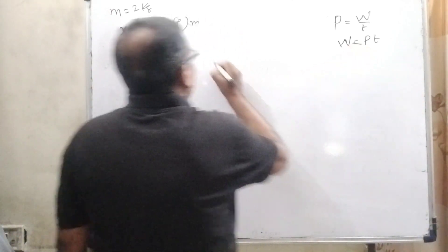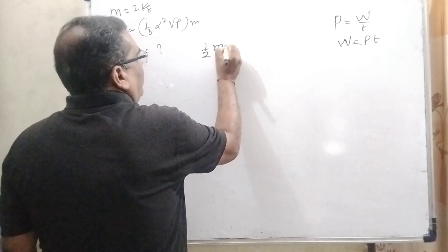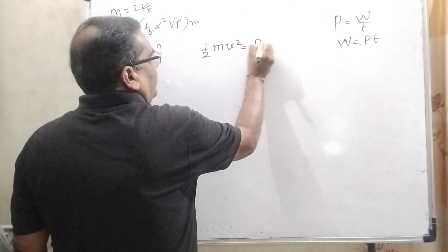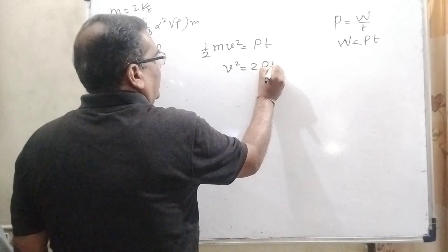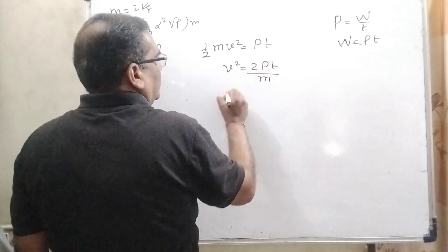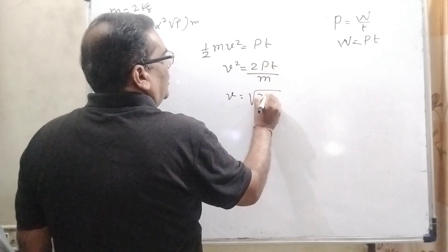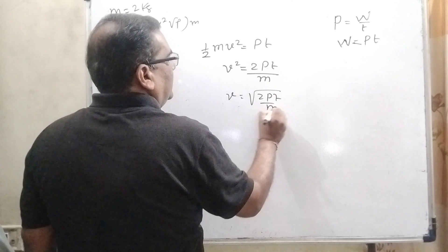So here, (1/2)Mv² is equal to PT. Then v² equals 2PT/M. Then v is equal to √(2PT/M).